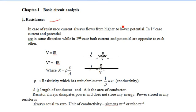This is the resistance. In the case of resistance, current always flows from higher to lower potential. Suppose that this is 5 volts and this is 3 volts. The current always flows from 5 to 3 volts. I is equal to 5 minus 3.